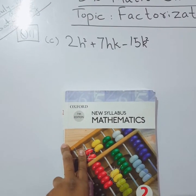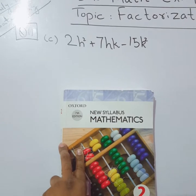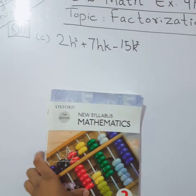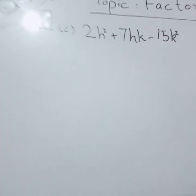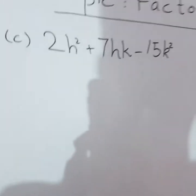Today we are doing chapter 4, exercise 4a and our topic is factorization. I have written question number 11c which is 2h² + 7hk - 15k². We have to do the factorization on this question.